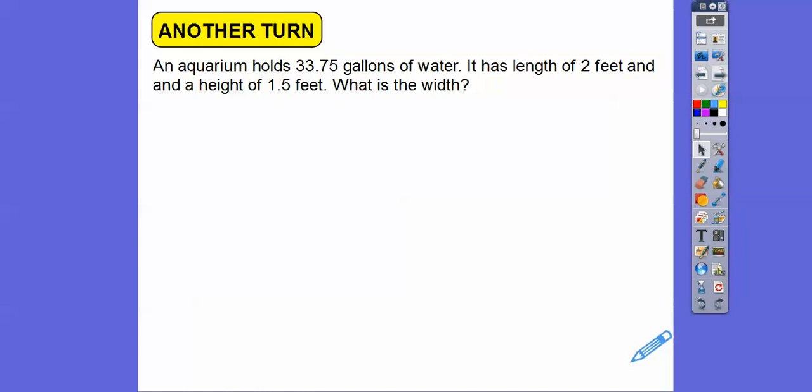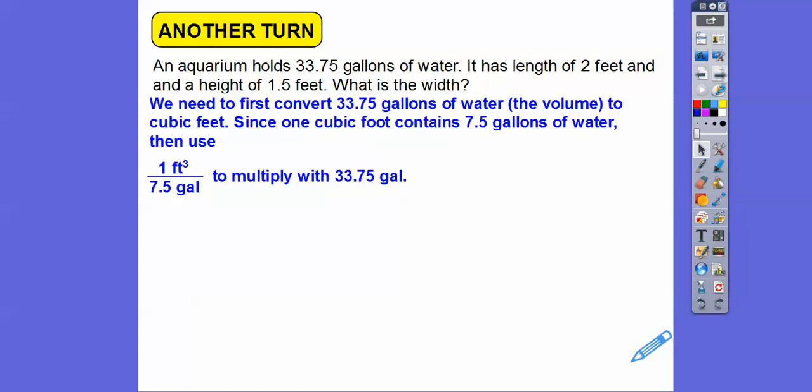Let's try another one of these. An aquarium holds 33.75 gallons of water. It has a length of 2 feet and a height of 1.5 feet. What's the width? So we need to convert that also. Remember, 1 cubic foot equals 7.5 gallons of water. So we're going to multiply 33.75 gallons times 1 cubic foot divided by 7.5 gallons, and the gallons will cancel.